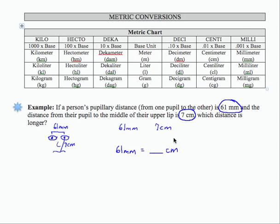I'm going to look on my table, and a millimeter is here in this place, and I want to take that from a smaller unit to a larger unit. So I'm going to move the decimal point one place to the left. That's going to give me 6.1 centimeters.